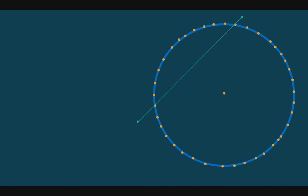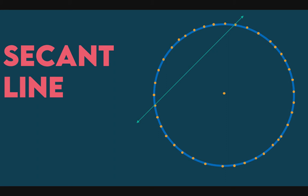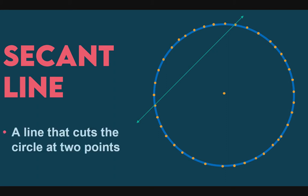Next, this next line enters the circle but exits right away — it has no plan to stay. We call this a secant line. A line that cuts the circle at two points. As we observe, the secant line extends beyond the circle, while a chord's endpoints are on the circle. The secant line has arrows on both ends, signifying that it extends further. That is the difference between a secant line and a chord.